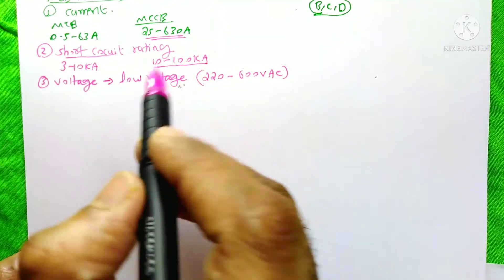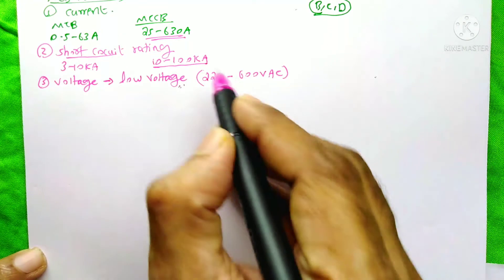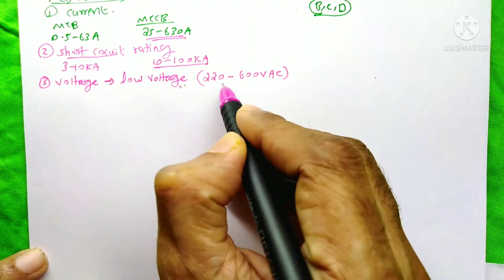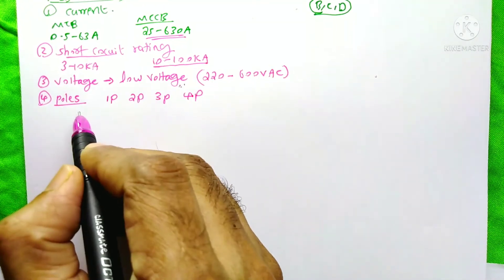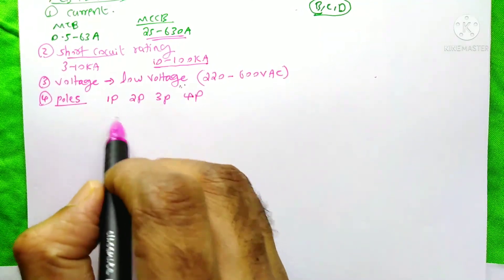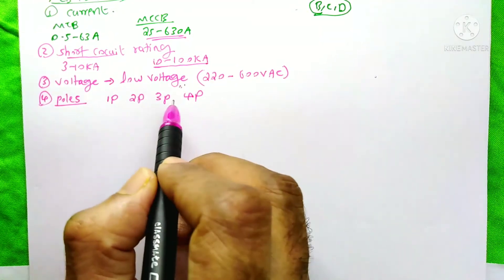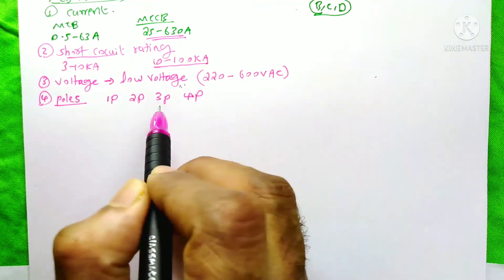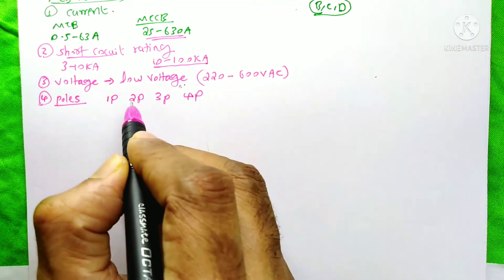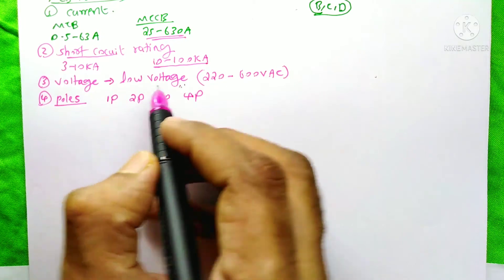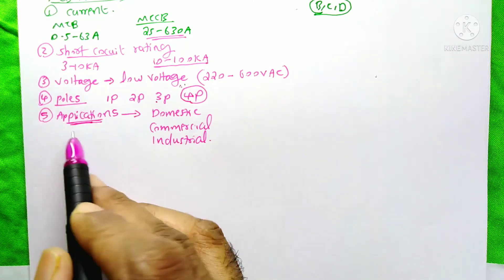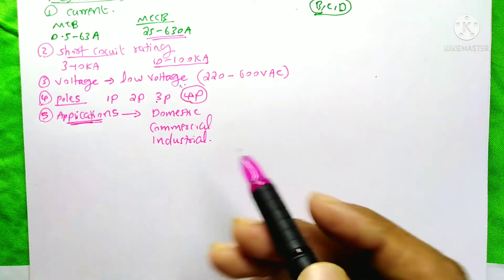The next factor is voltage. Both MCB and MCCB are low-voltage devices, operating from 220 to 600 volts AC. The next factor is the number of poles. Both MCB and MCCB are available in single pole, double pole, 3-pole, and 4-pole configurations. Single pole and 2-pole are only applicable to single-phase circuits, while 3-pole and 4-pole are for three-phase circuits.